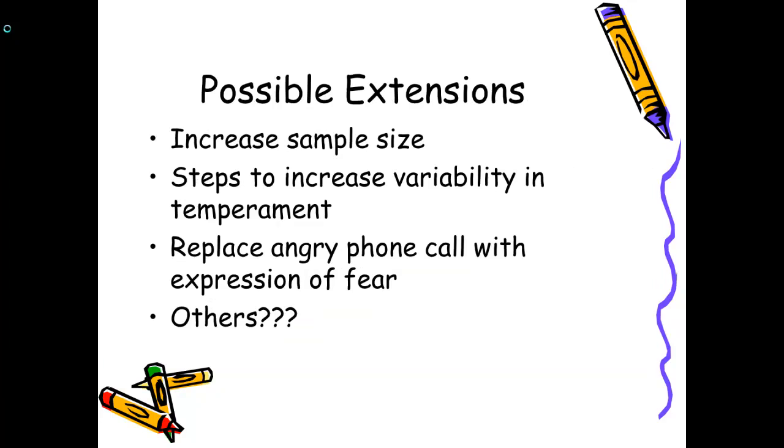So here are the possible extensions that the authors suggest. Increase the sample size. Now that's a very, very no-brainer extension. And in terms of grading that, I wouldn't really give that a high grade because it's a very, very easy thing to do. It involves no knowledge of the research, no knowledge of the theories involved. And that would be a good idea, but not an A-plus idea. They suggest steps to increase the variability in temperament of the subjects. And that's a good idea also. They talked about replacing the angry phone call with expressions of fear. Another good A-plus extension.